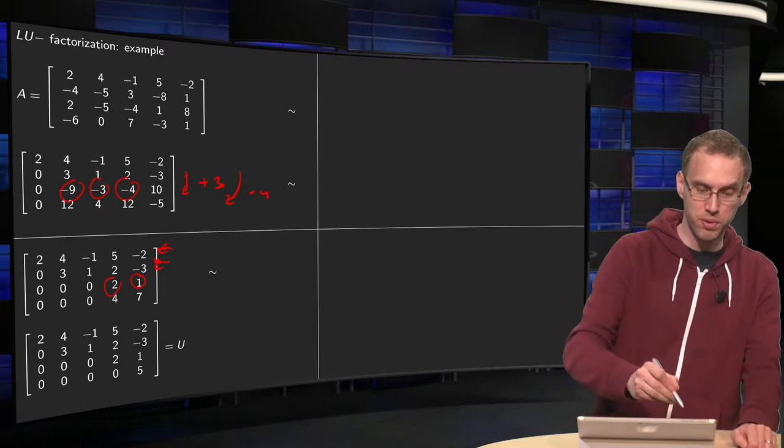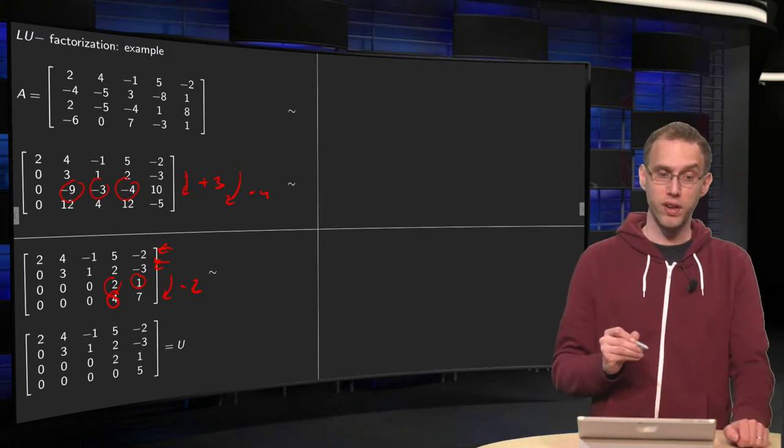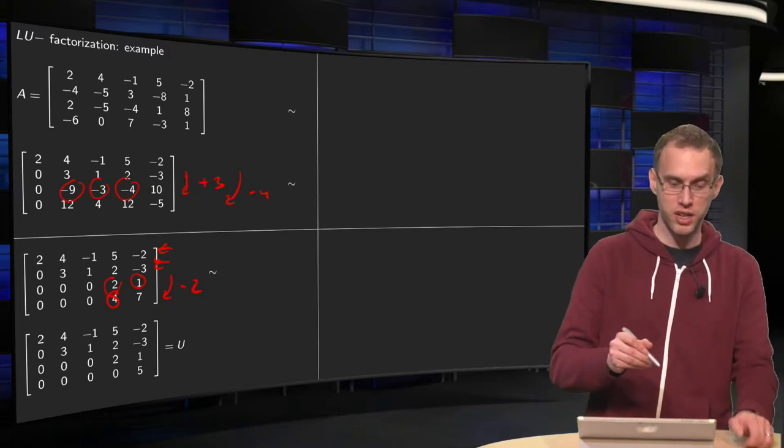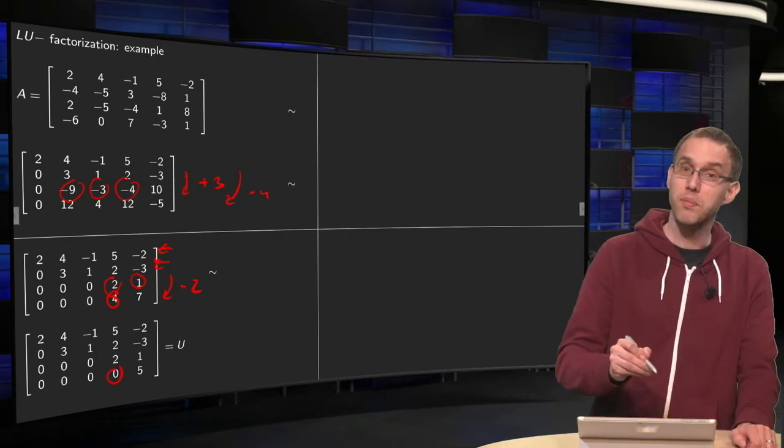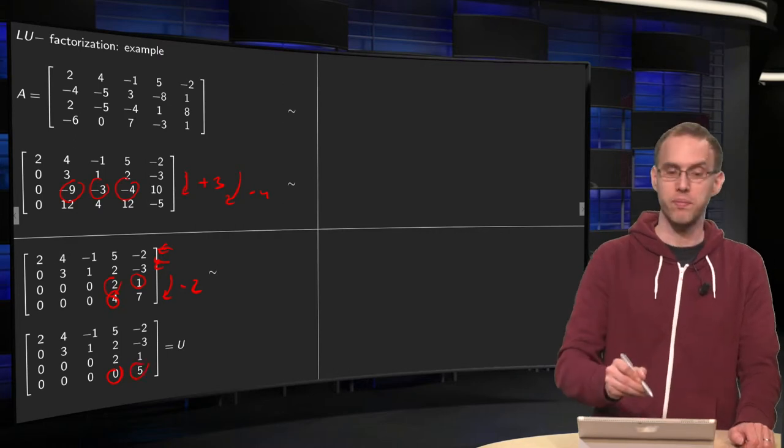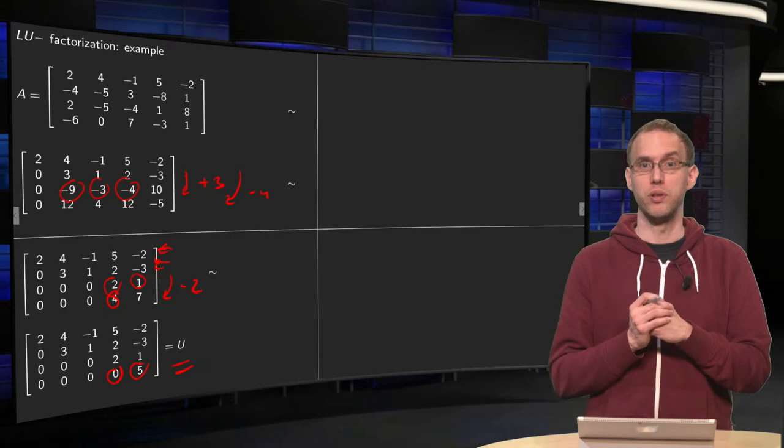Then, in the last step, we want to make a zero here. Add -2 times the third row to the fourth one. You get -4 plus 4 equals 0, and -2 plus 7 equals 5. And there you have your U for your LU decomposition.